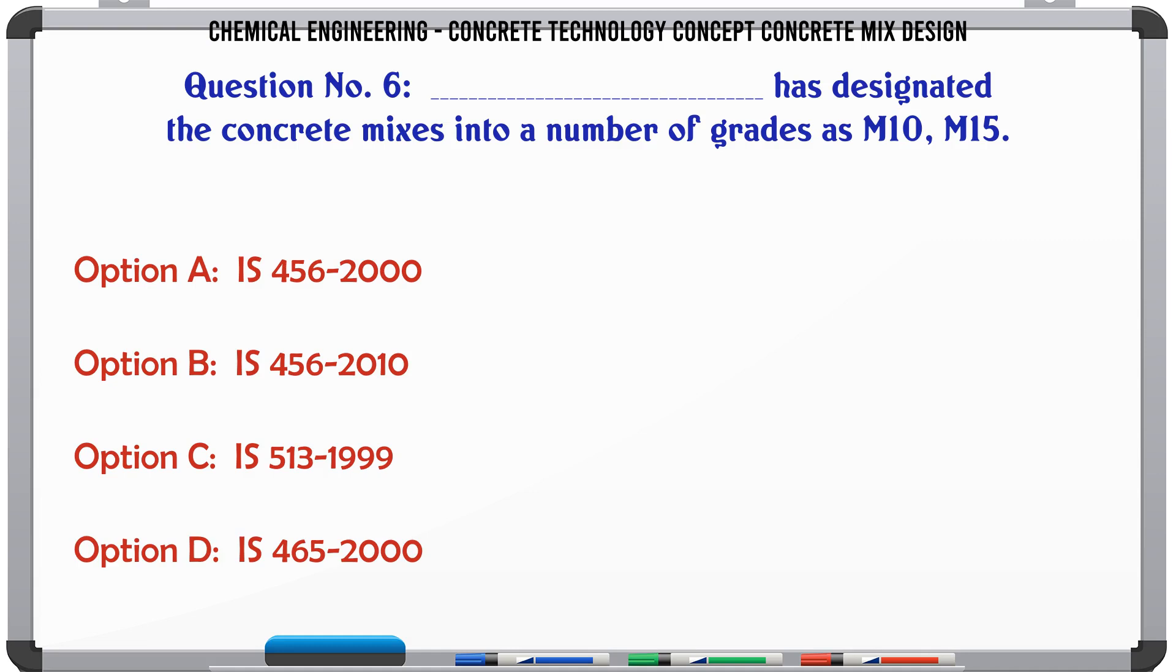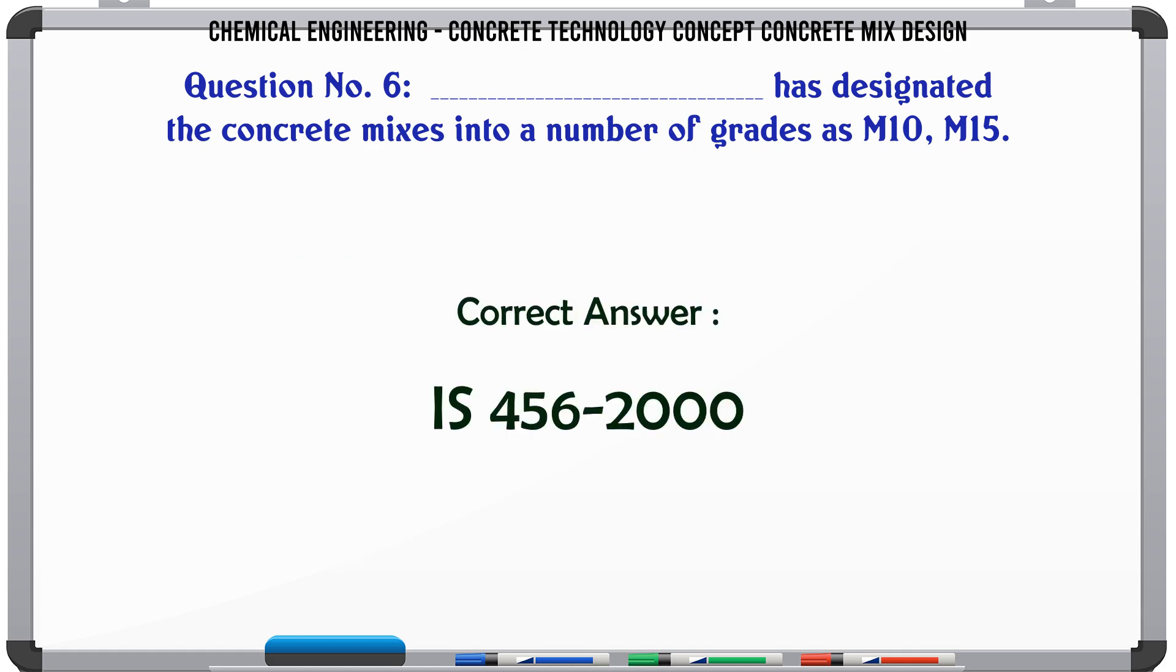Which standard has designated the concrete mixes into a number of grades as M10, M15? A: IS 456-2000, B: IS 456-2010, C: IS 513-1999, D: IS 465-2000. The correct answer is IS 456-2000.